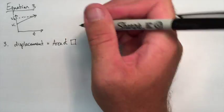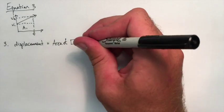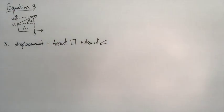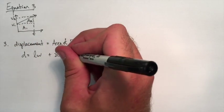So what we need to do is we need to break that area down into two parts. There's going to be a rectangle and there's going to be an area of a triangle. So the total displacement would be the area of that rectangle plus the area of the triangle.